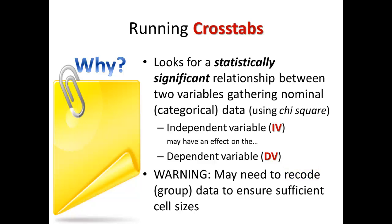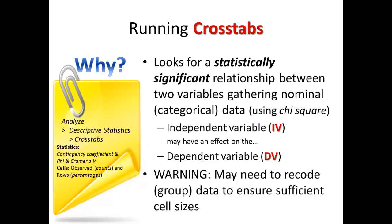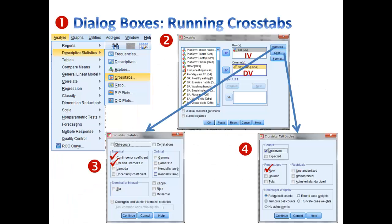The procedure is very simple. Go to Analyze, Descriptive Statistics — just like you did for frequencies — only now you choose Cross-tabs. Some additional things you'll want to check are contingency coefficient and phi and Cramer's V, and you'll also want to go to the Cells section and check counts for observed and percentages for rows. Here is what the dialog box looks like.